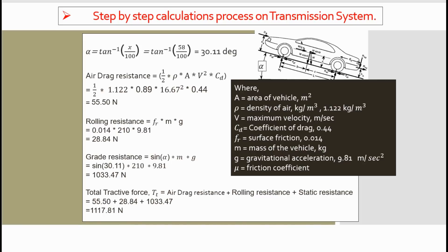Let's start step-by-step calculation. We need the angle theta alpha. For calculating alpha angle, you need tan inverse of x divided by 100, where x means the vertical distance covered by your vehicle — x meters in vertical direction while moving 100 meters in horizontal direction. From that we have got 30 degrees of angle. There are different resistances: air drag resistance, rolling resistance, and grade resistance — all of which will give us the tractive force.